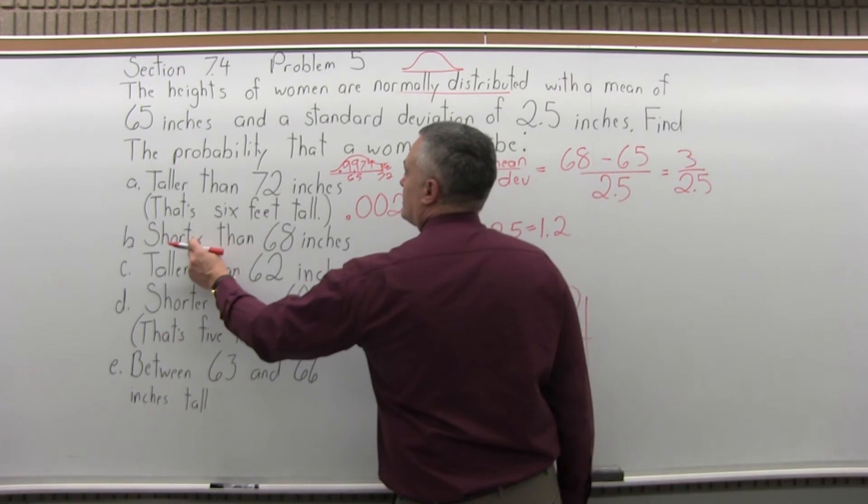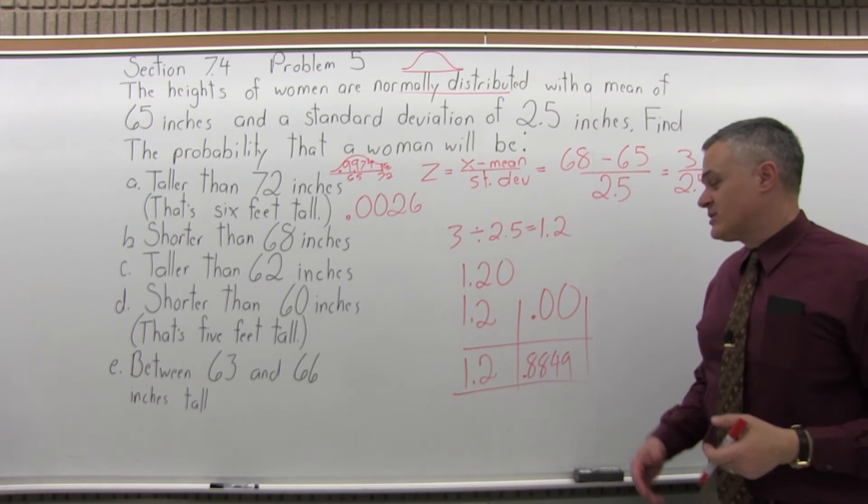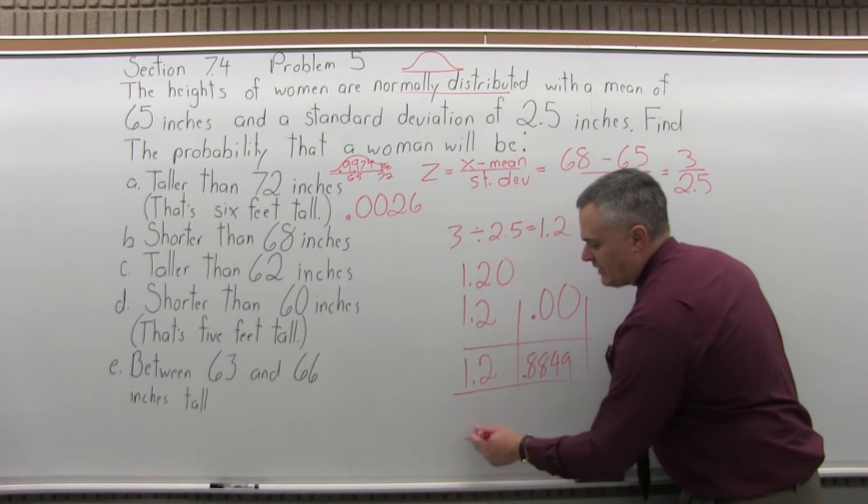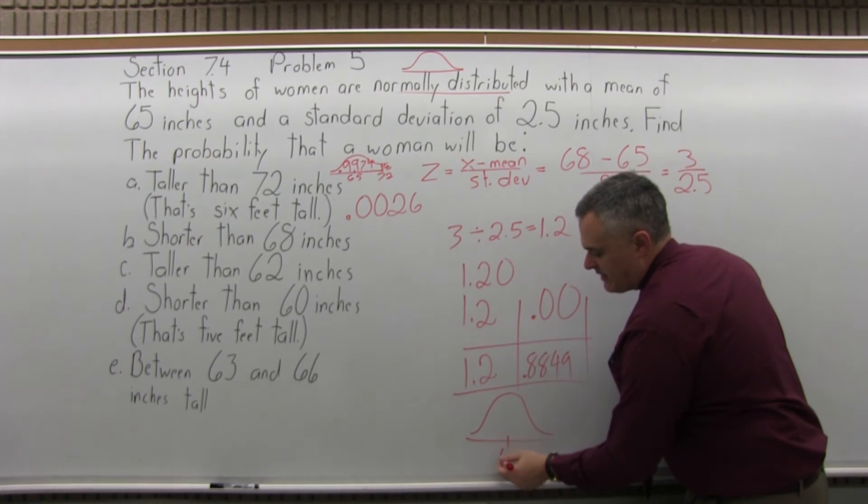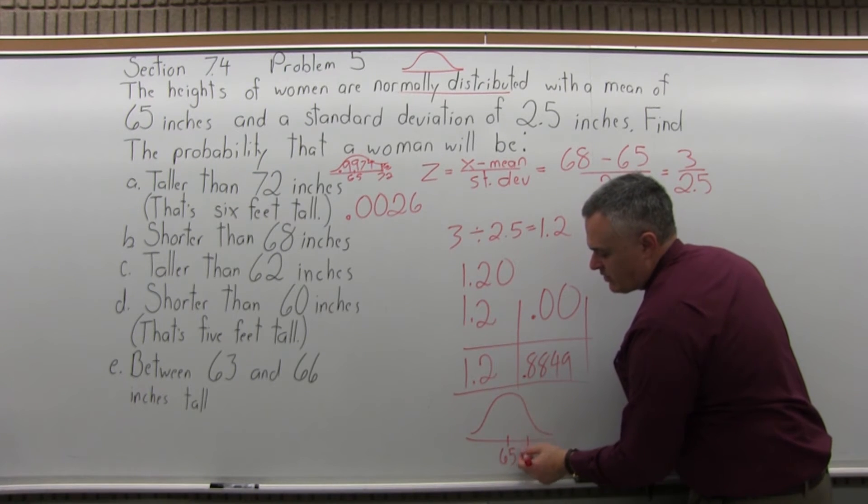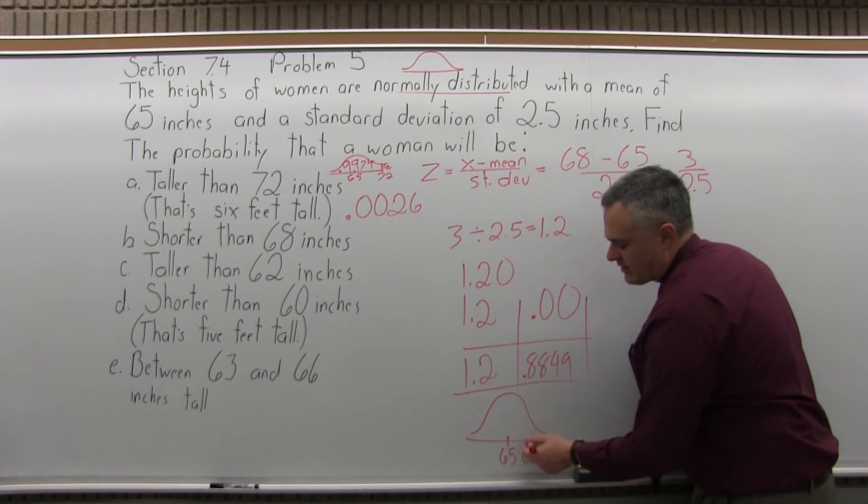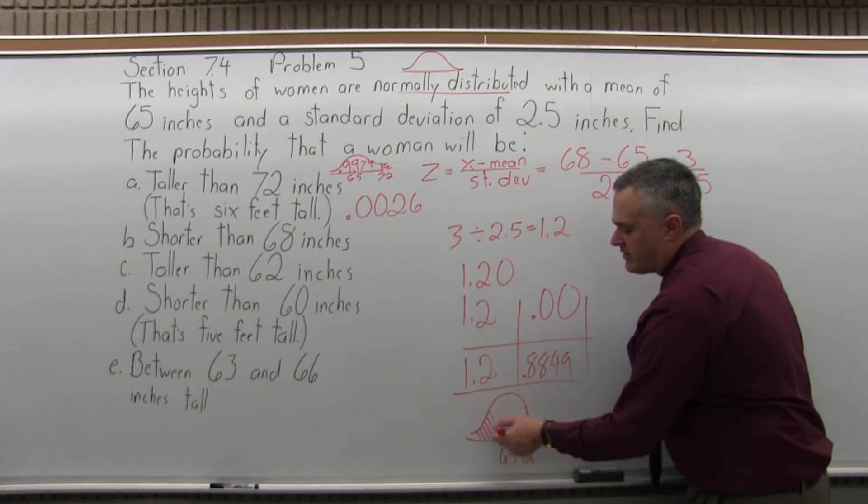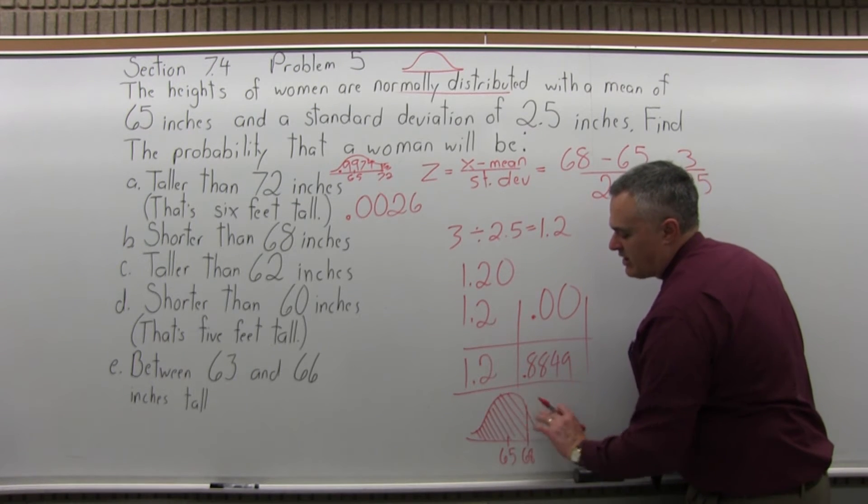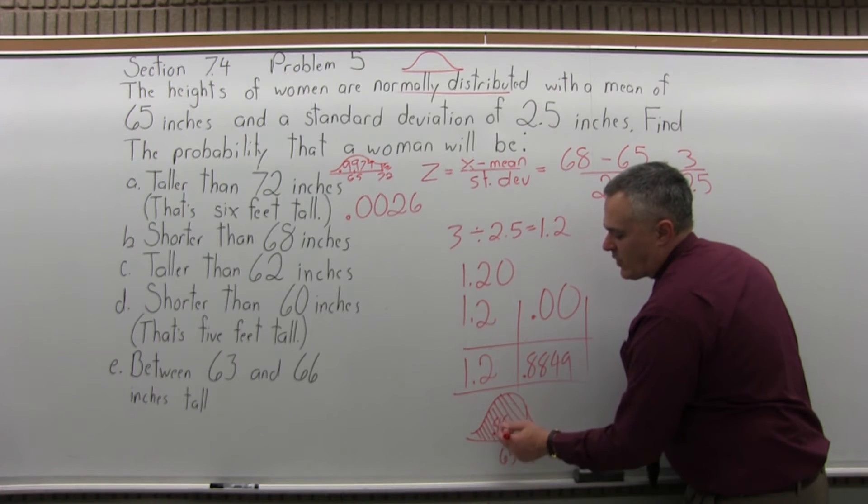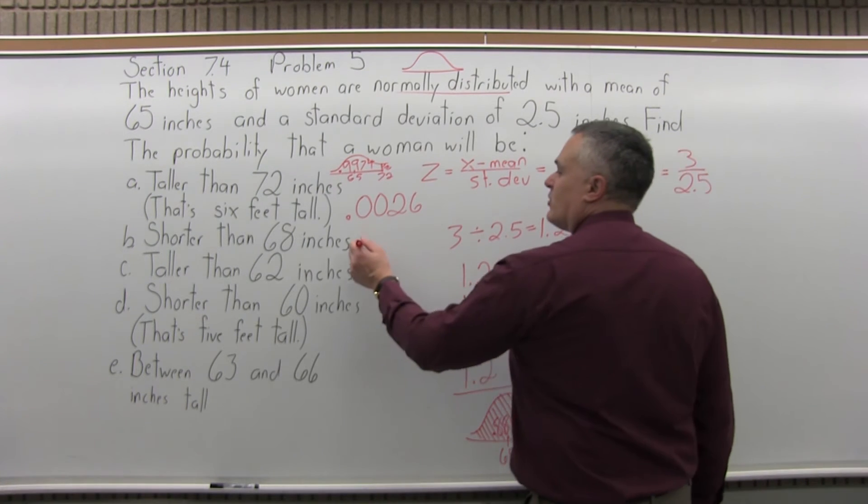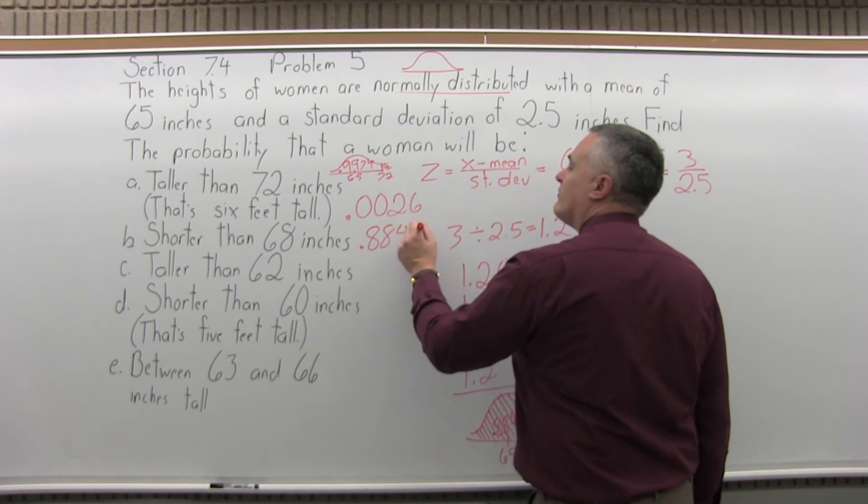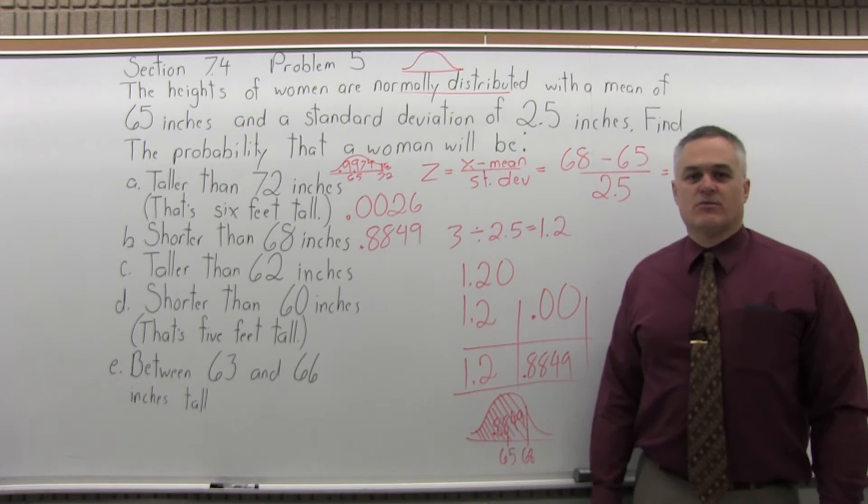Now, this question says shorter than. So shorter than is like less than. The chart tells you less than. So again, visually, the average value is 65 in the middle. 68 is a little bigger, so I'll write it to the right of the 65. The probability of being shorter would be the probability that's to the left. And that 0.8849 from the chart is exactly the area we're looking for. So the probability that a woman is shorter than 68 inches is 0.8849 or approximately an 88.5% probability.